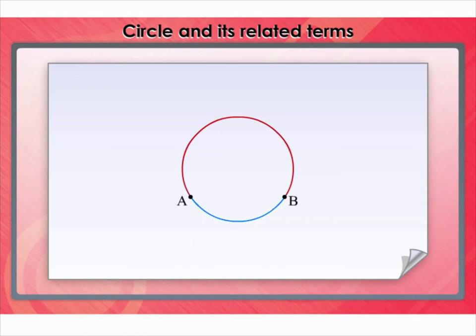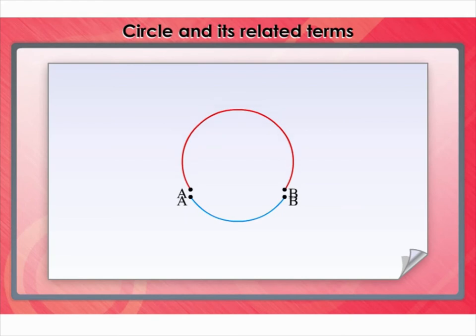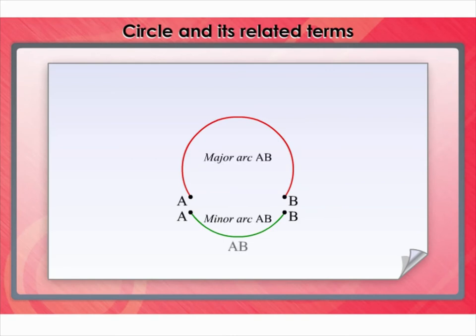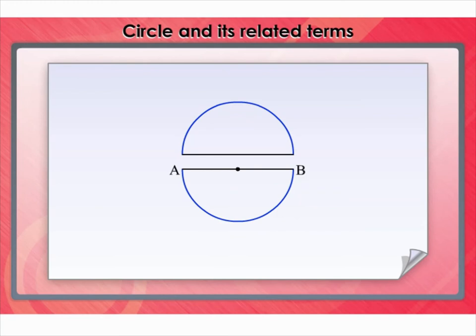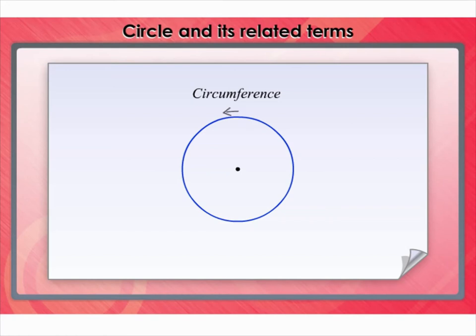Look at the pieces of the circle between two points A and B. There are two ways to move from A to B. The longer one is called the major arc AB, and the shorter one is called the minor arc AB. The minor arc AB is also denoted by arc AB, and the major arc AB by arc ACB, where C is some point on the arc between A and B. The diameter divides the circle into two equal arcs called semi-circles. The length of the complete circle is called the circumference of the circle.